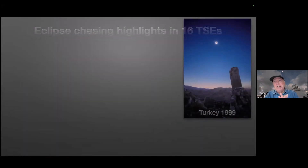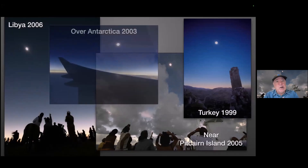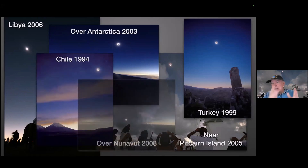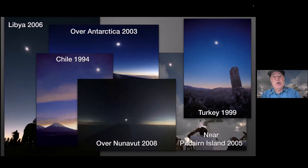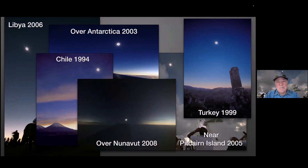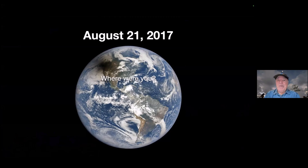My eclipse chasing highlights include 16 total eclipses: Turkey in 1999, deep in Kurdistan; Pitcairn Island; over Antarctica on a plane in 2003; in Qaddafi's Libya in 2006 where the skies were fabulous; from the Chilean Altiplano in 1994 shot on film; and in an aircraft over the Canadian Arctic in 2008 — the last total eclipse of the sun in North America prior to 2017. I've shot eclipses from sea, from land, from air. If you saw the 2017 eclipse, you want to see another one. If you didn't, this is your chance.